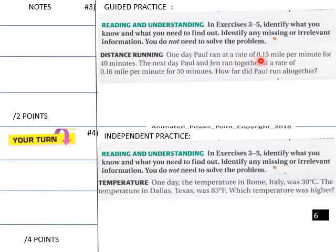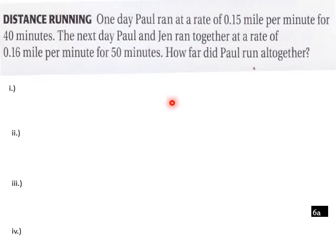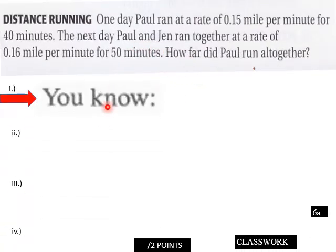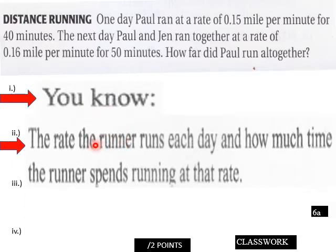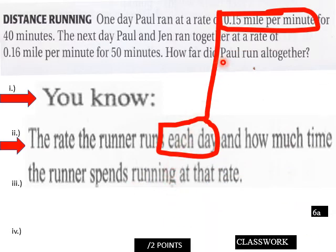So distance running. One day, Paul ran at a rate of 0.15 miles per minute for 40 minutes. The next day, Paul and Jan ran together at a rate of 0.16 miles per minute for 50 minutes. How far did Paul run all together? So he has 2 days here running. Down here, which temperature was higher? You've got to figure that one out. Let's go up here and do our guided now with Paul's running mileage. How far did Paul run all together? So we do know something here.